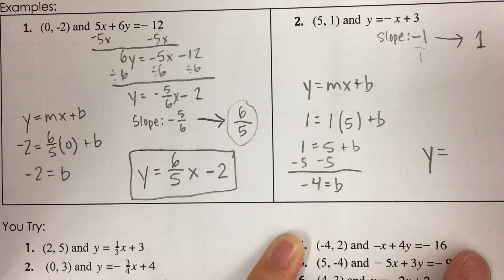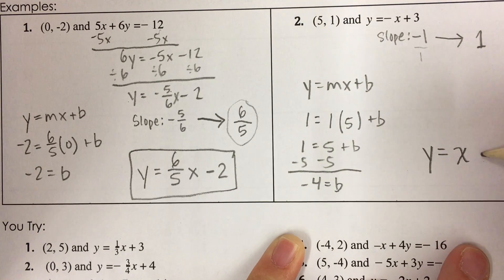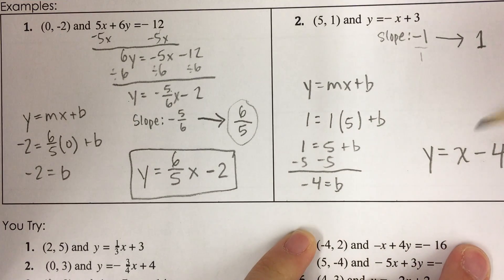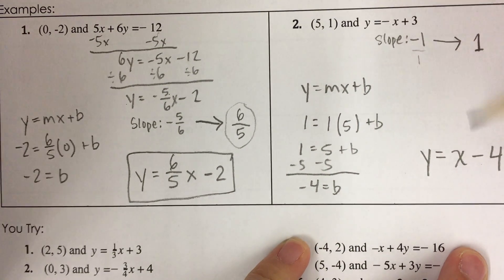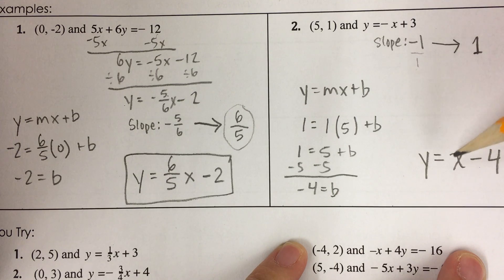I get negative 4 equals b. So my line is y equals 1x, just x, minus 4. Okay, notice this is perpendicular. This has a slope of negative 1. This has a slope of positive 1. Those are opposite reciprocals.